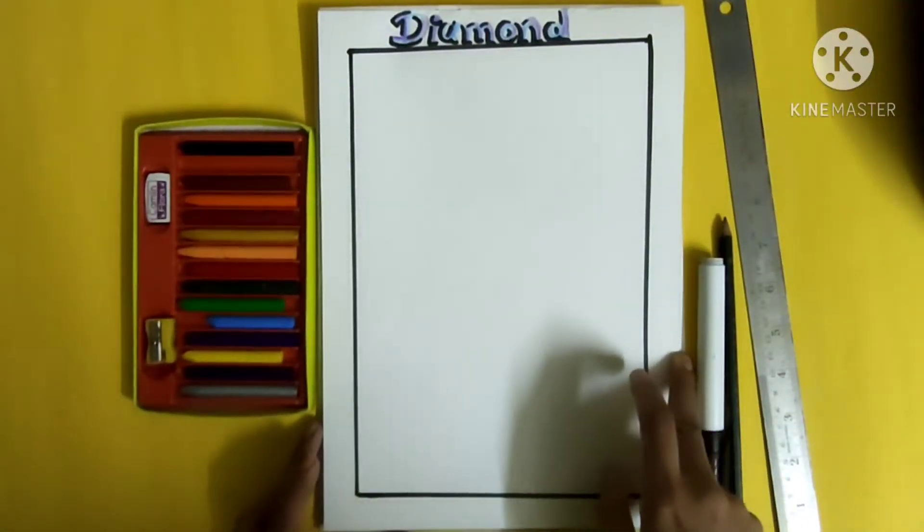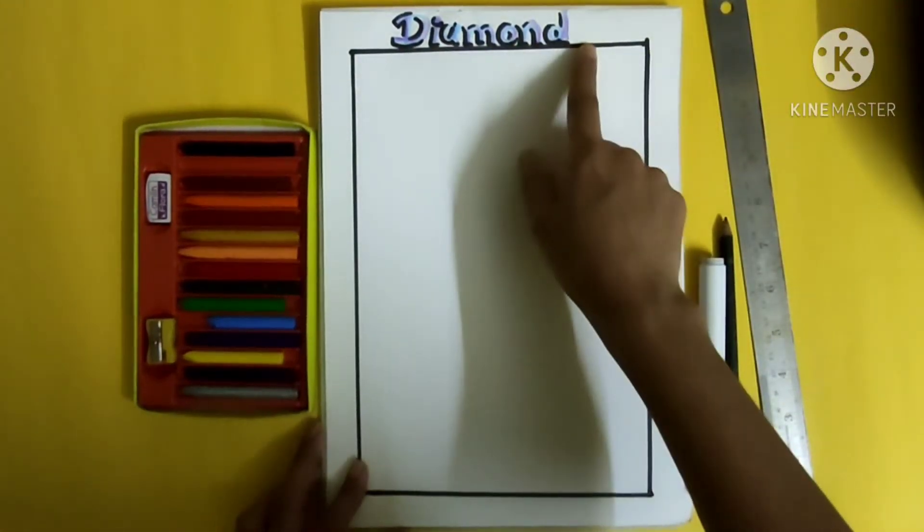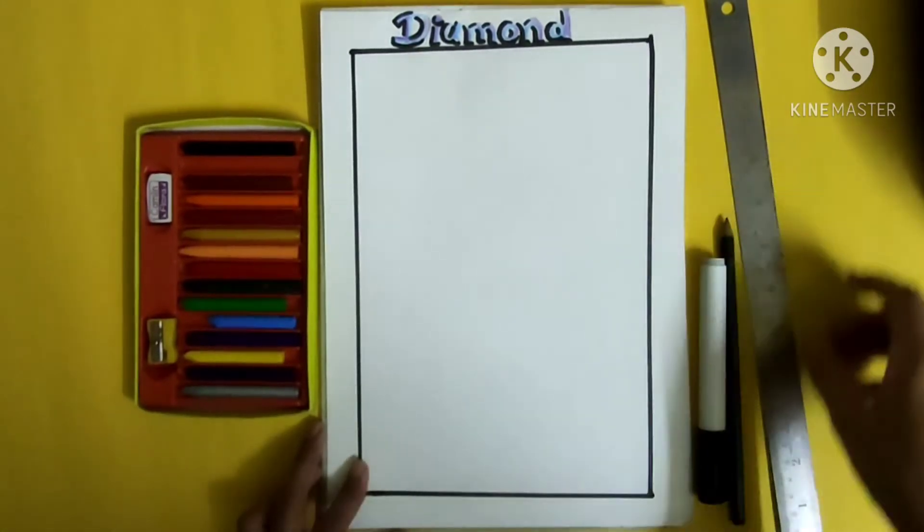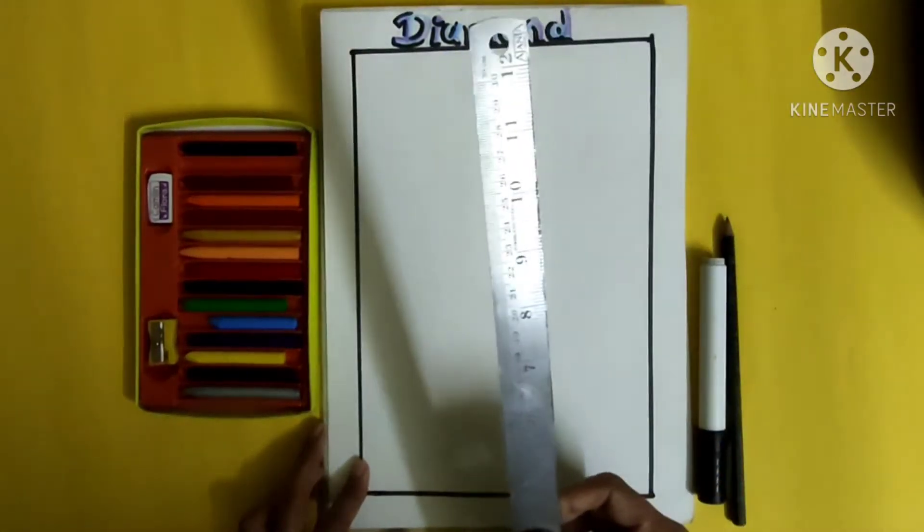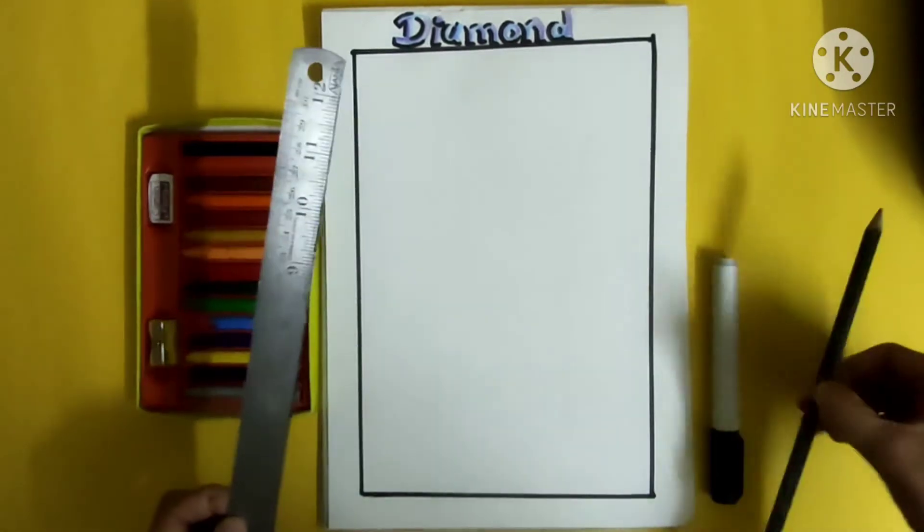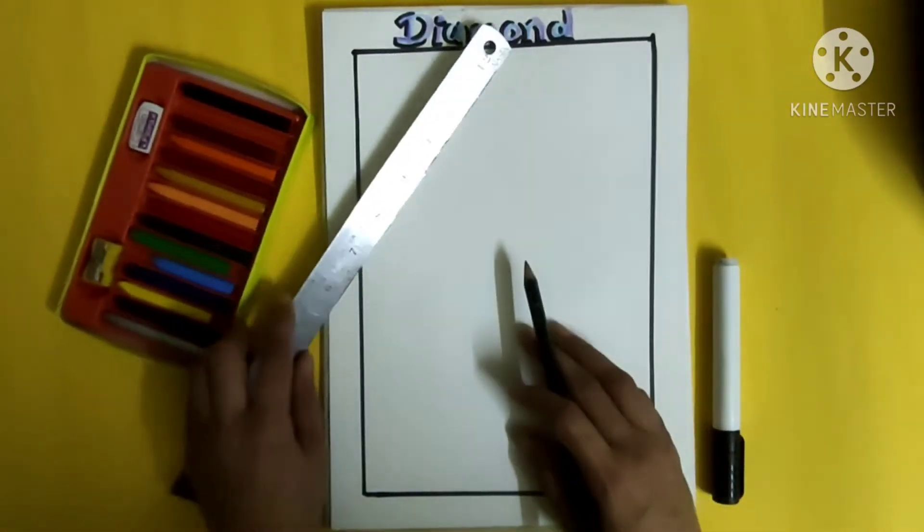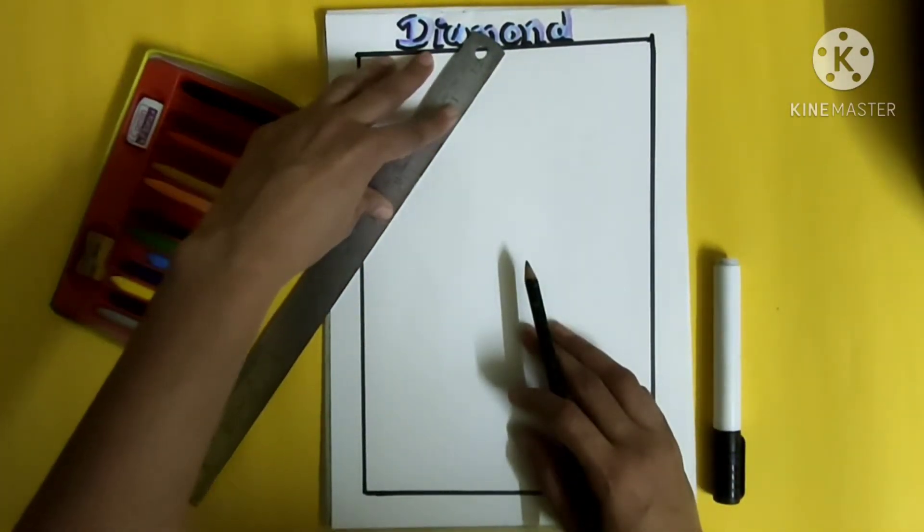Hello my little wonders, today we will draw a diamond shape. So for that we require one scale and pencil to draw and colors for coloring.